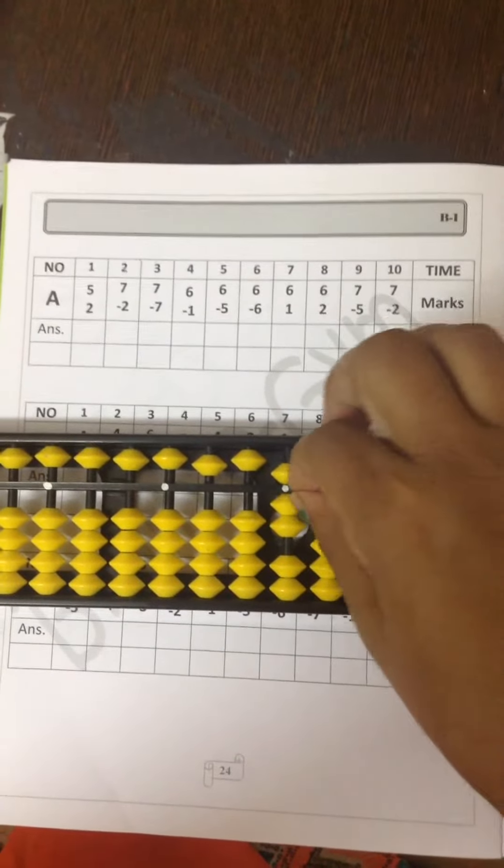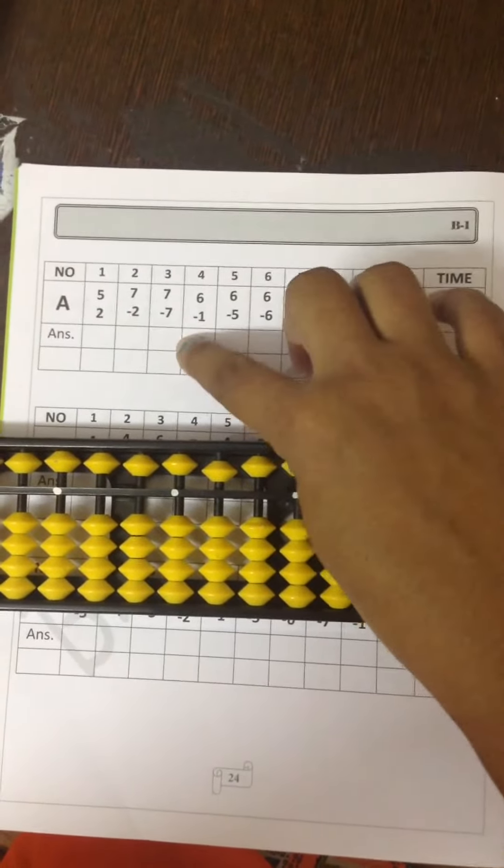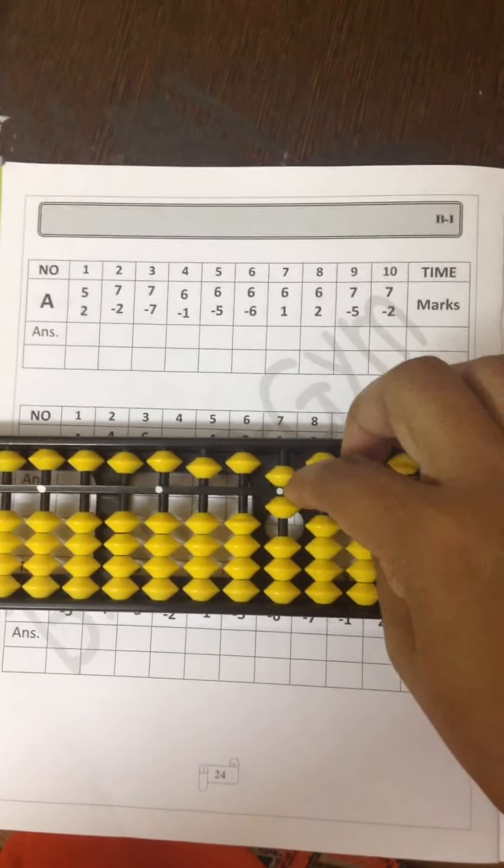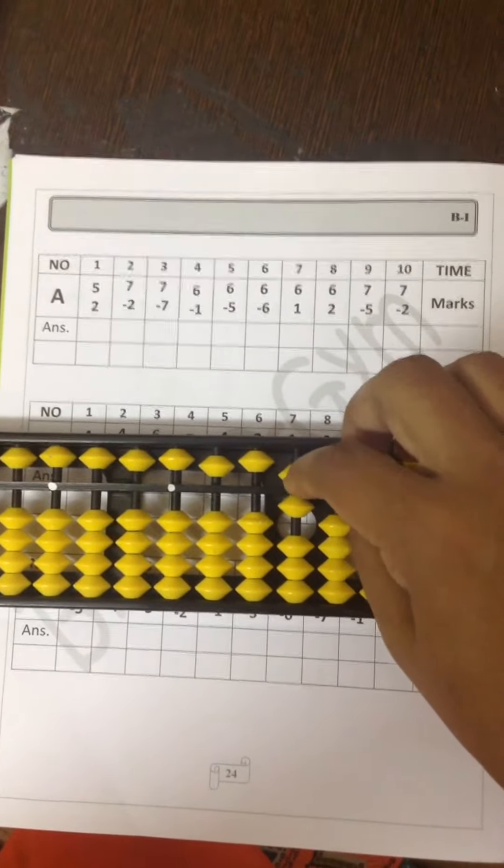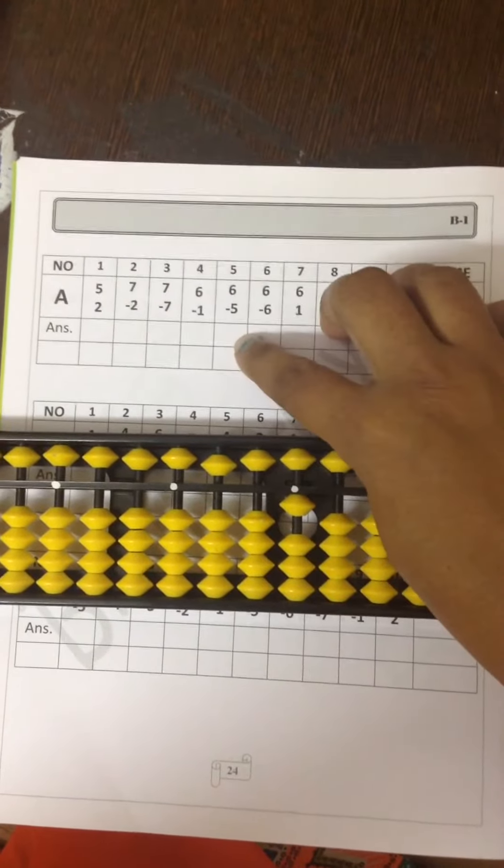7 minus 7. Write the answer in this place. 6 minus 1 that is 5. 6 minus 5. The answer is 1.